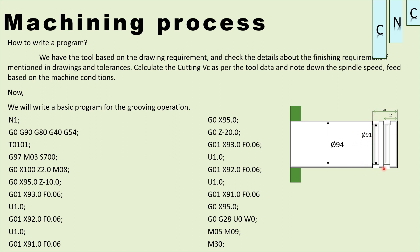This is the context of the basic program. M05 is spindle stop, coolant off, and end of program. This is basic programming.